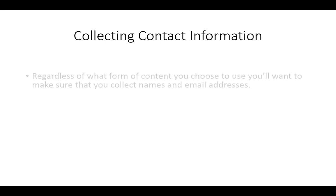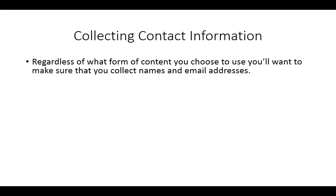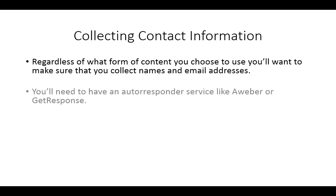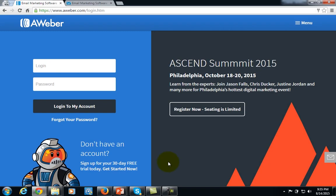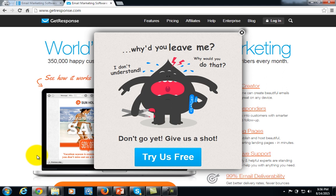Welcome back to Alternative Authority Content. In this video, we are going to discuss the most important aspect of really converting that content into prospects and buyers — collecting contact information. Regardless of what form of content you choose, whether blog content, video, or audio, you want to make sure you are collecting names and email addresses of people who come in contact with your content. In order to do this, you'll need to have your own autoresponder service like Aweber or GetResponse. Aweber starts with a 30-day trial, and pretty much the same is true with GetResponse — you can try it for free.